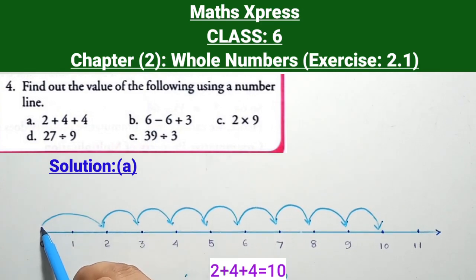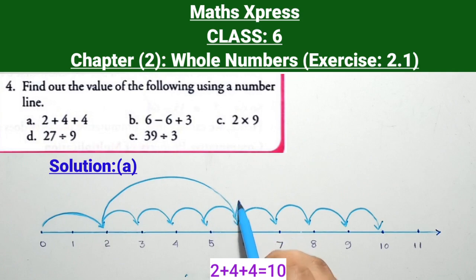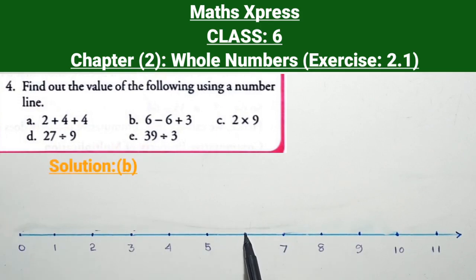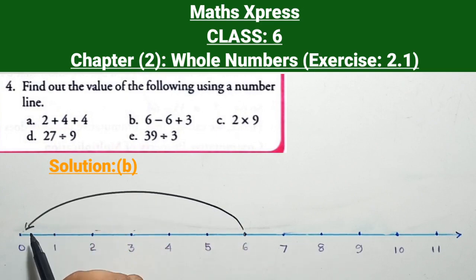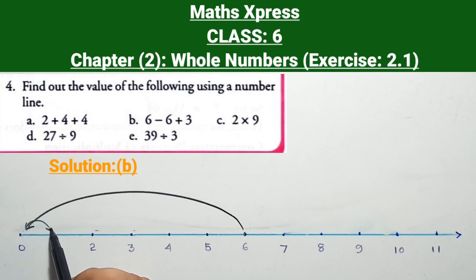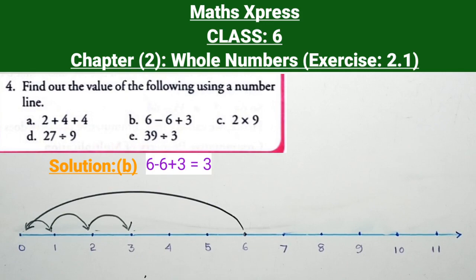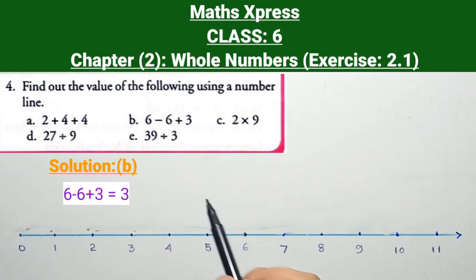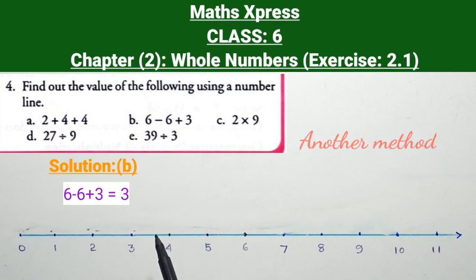We can also solve this differently. Starting from a point, positive 6 means we move 6 points forward. Then minus 6 means we move backward, towards the left side. From there, plus 3 means we move 3 points forward on the right hand side — 1, 2, 3. Therefore, 6 − 6 + 3 = 3.